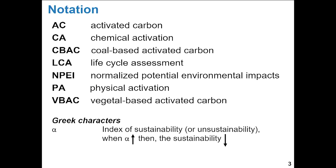Here is a short list of the main abbreviations I will use during this presentation. AC for activated carbon, CA for chemical activation, CBAC for coal-based activated carbon, LCA for life cycle assessment, PEI for normalized potential environmental impacts, PA for physical activation, and VBAC for vegetable-based activated carbon. Also, I am going to use the Greek character alpha as the index of sustainability. It's important to know that if alpha increases, the sustainability decreases.